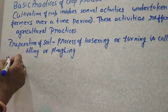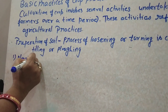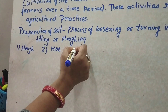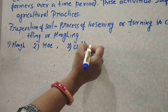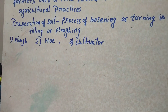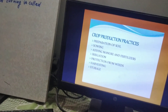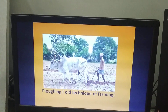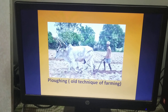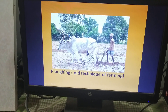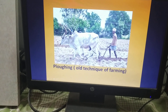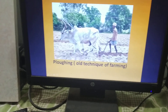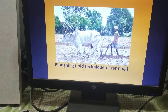The tools or implements used for loosening or turning the soil are the plough and the cultivator. This is a very old technique of farming — farmers used bulls, and with the help of bulls, the process of turning the soil was done in previous times.